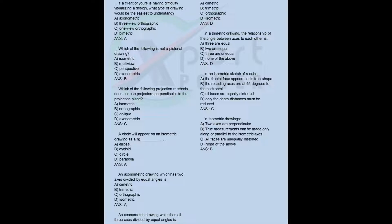If a client is having difficulty visualizing a design, what type of drawing would be the easiest to understand? a) axonometric, b) three-view orthographic, c) one-view orthographic, d) diametric. Answer: A. Which of the following is not a pictorial drawing? a) isometric, b) multi-view, c) perspective, d) axonometric. Answer: B.